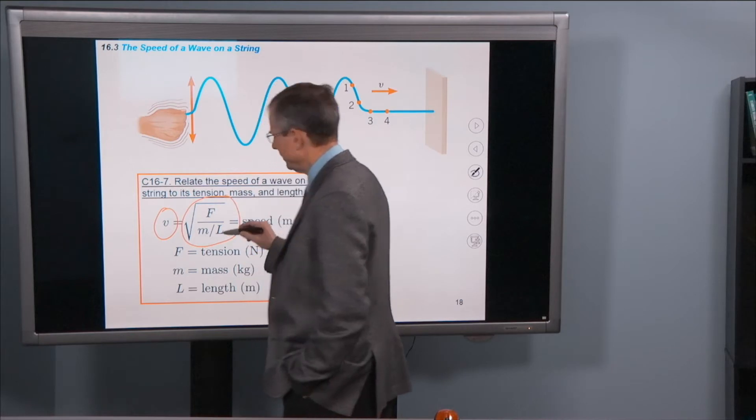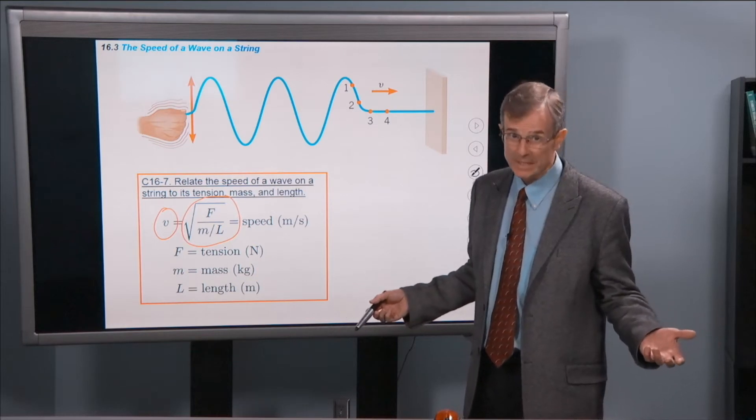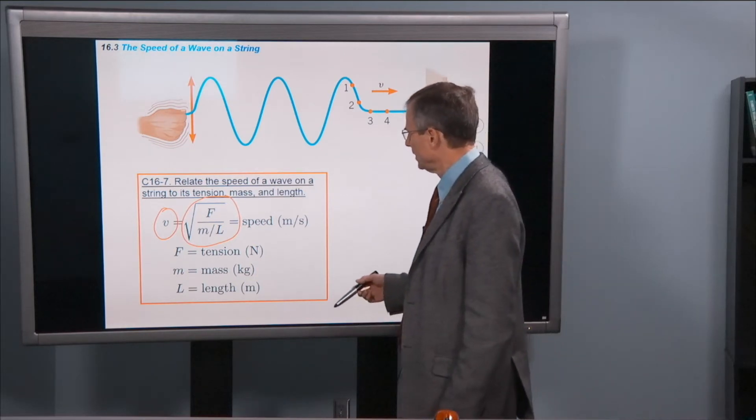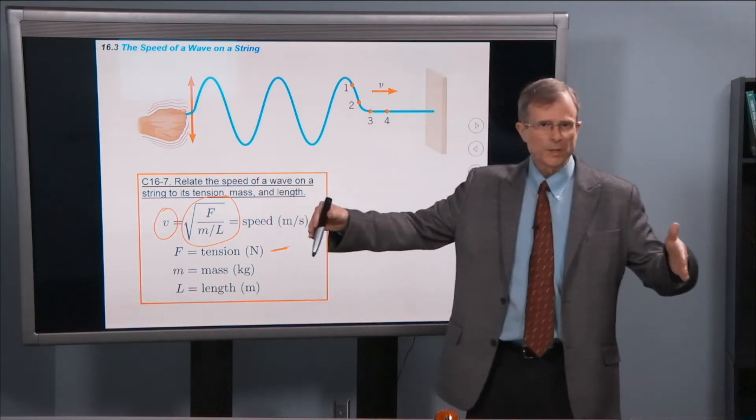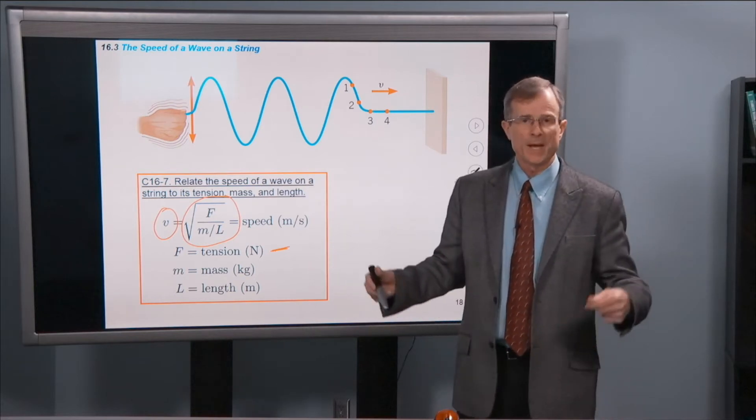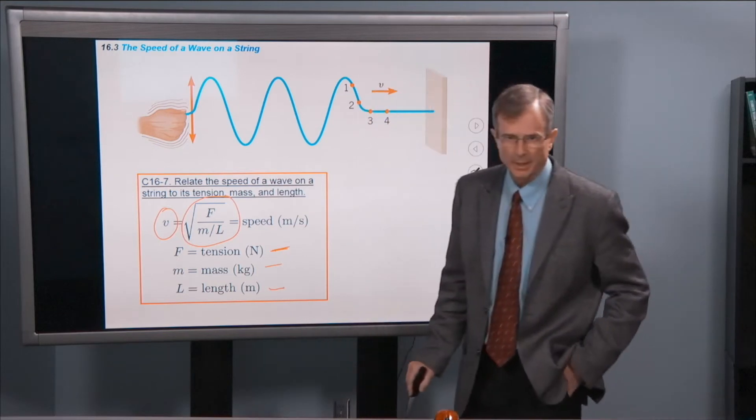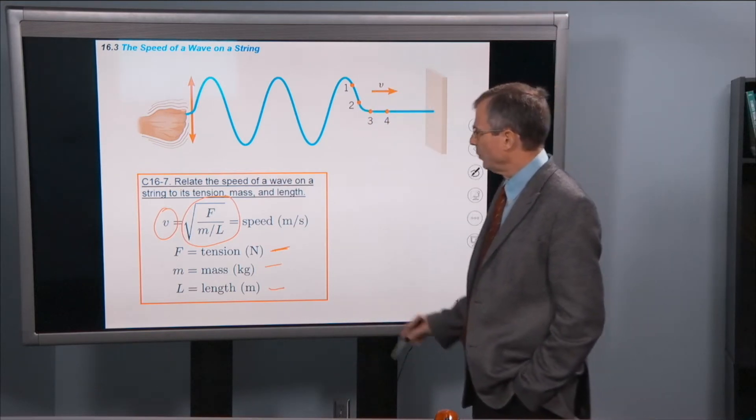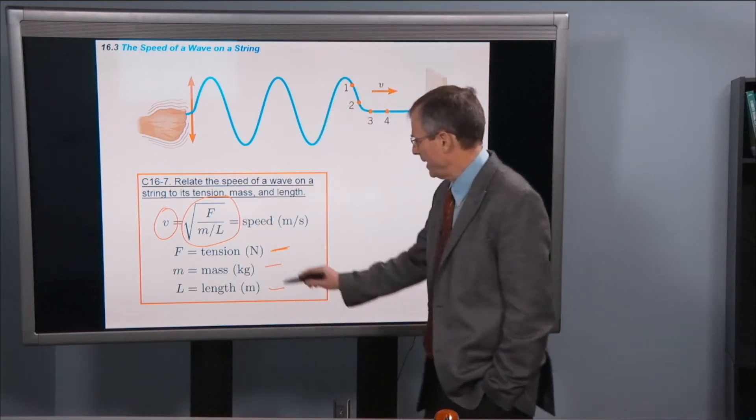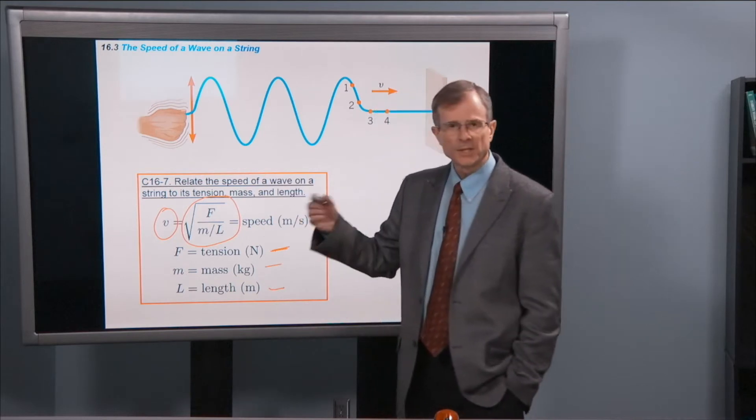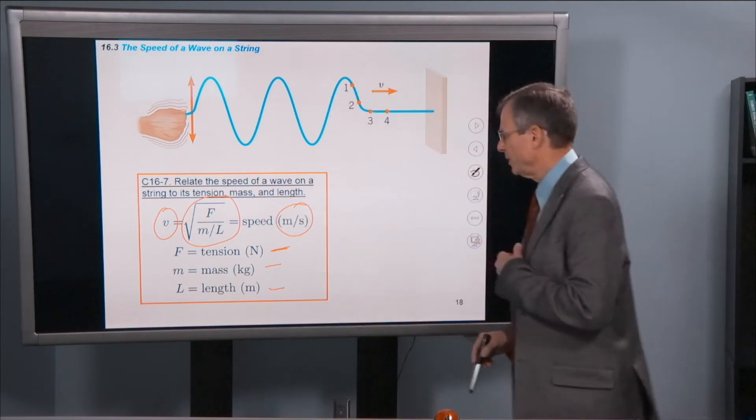The square root of the tension, which we're denoting by F to avoid confusion with period T. And that tension is measured in newtons. Then the mass of the piece of string that we're talking about, we just put it on a scale and figure out what its mass is. That's measured in kilograms. And then the length of the string measured in meters. And if you work out the units, you'll see that you've got newtons here divided by mass in kilograms and meters in length. And then you take the square root. It's an easy exercise to show that the answer that you get out of this deal has to be measured in meters per second.